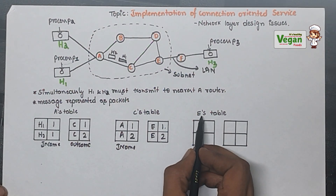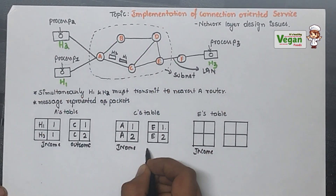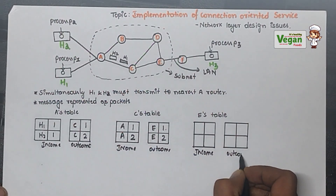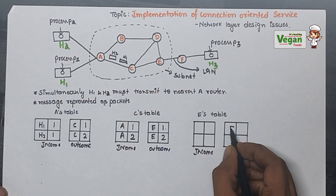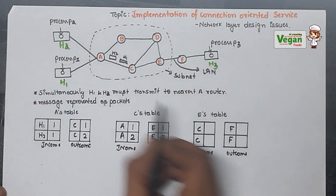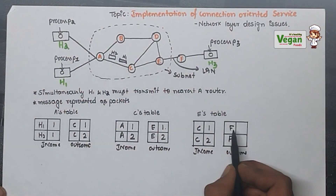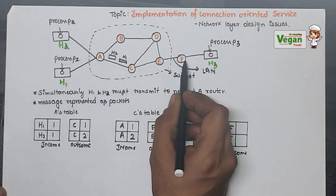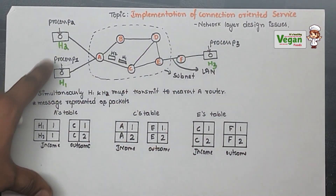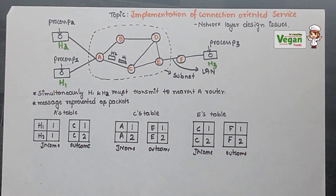For Router E's table: E is receiving from C, so the incoming is from C, and the outgoing is to F. It gets Host 1's information represented as 1 and Host 2's information represented as 2. While sending to Router F, it represents Host 1's message and Host 2's message as 1 and 2 respectively. After reaching Router F, the information is sent to the receiver, who tracks whether it is correct.